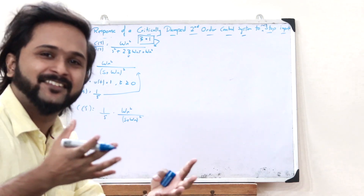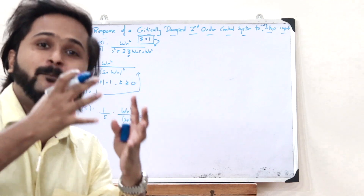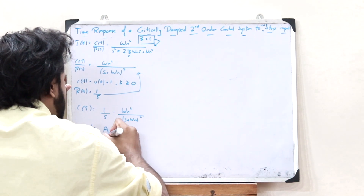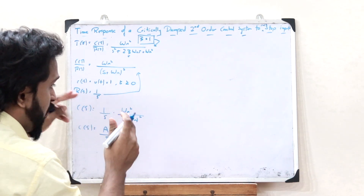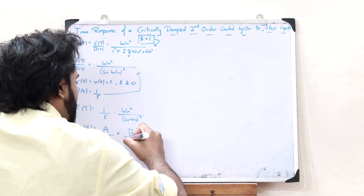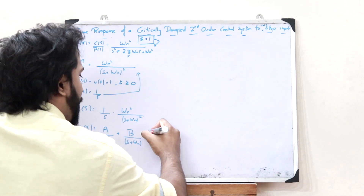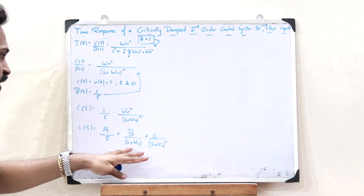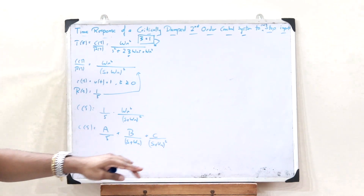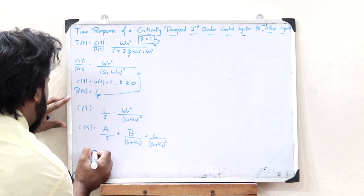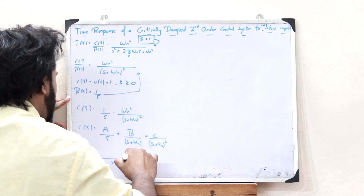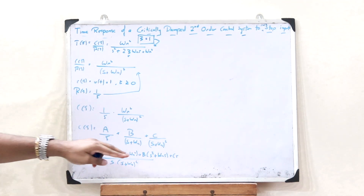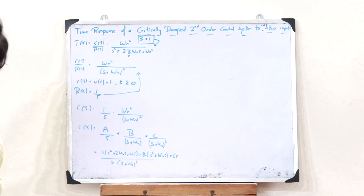In order to find the inverse Laplace transform of C(s), we need to use the concept of partial fractions. Writing C(s) in terms of partial fractions, we get C(s) = A/s + B/(s + omega_n) + C/(s + omega_n) squared. We have split this into three partial fractions. Taking the LCM, the numerator becomes A·(s + omega_n) squared + B·(s² + omega_n·s) + C·s.